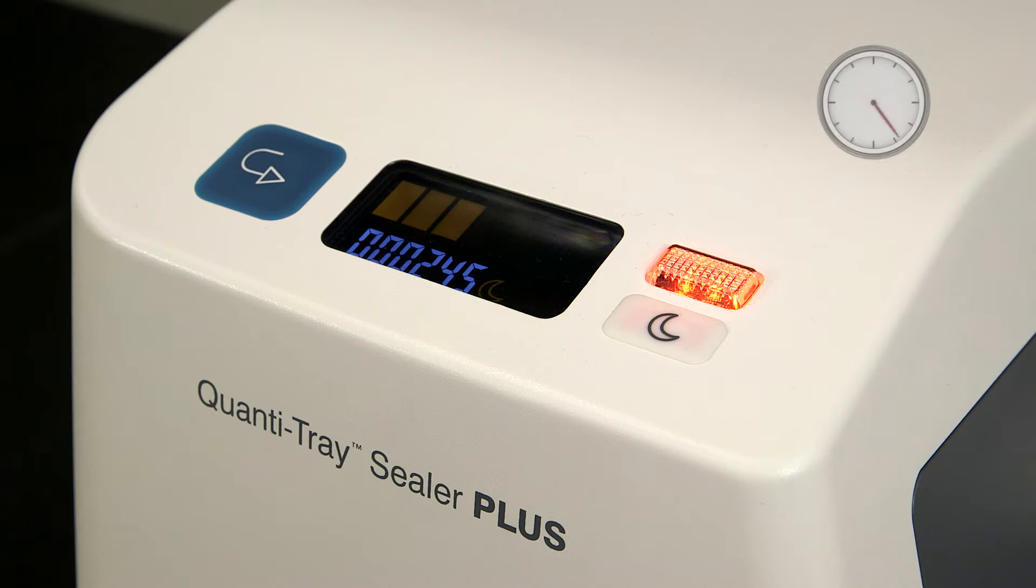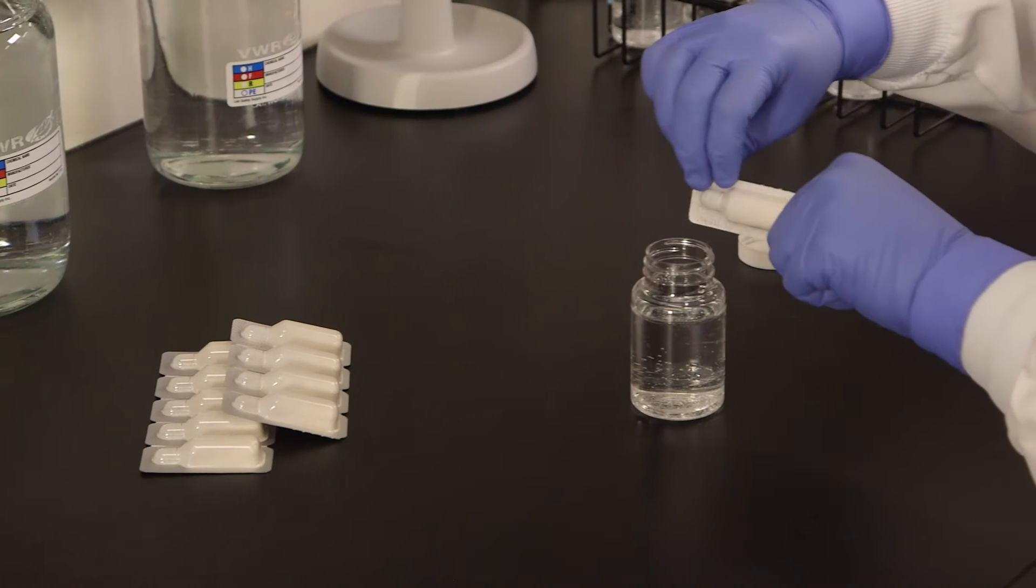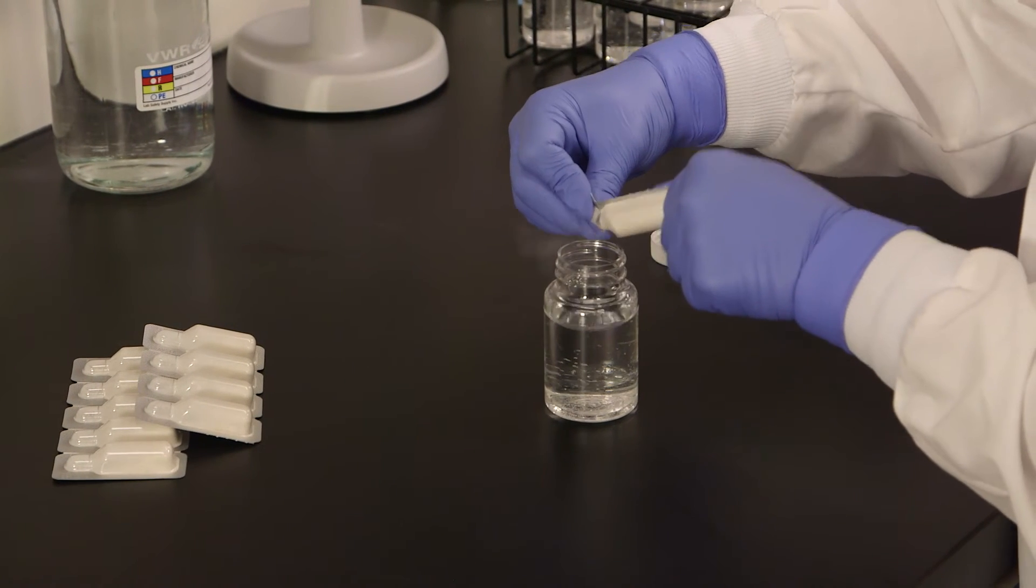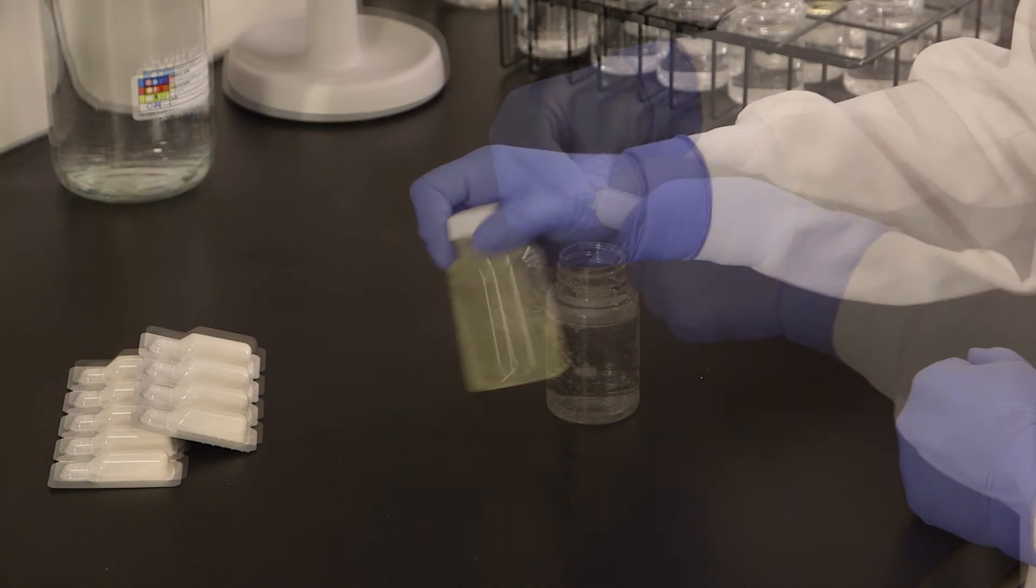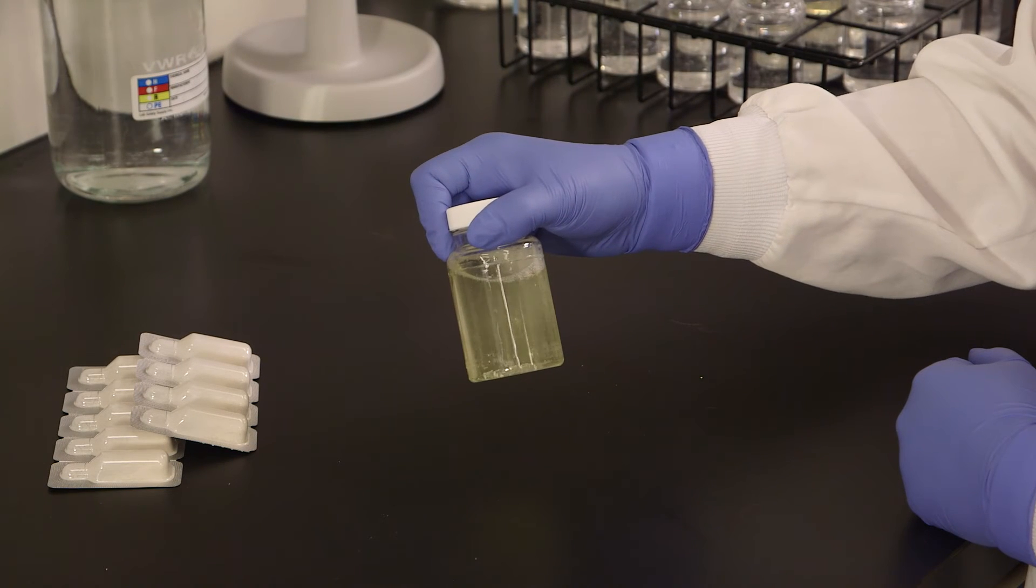Turn on the sealer and then wait until a green bar appears on the display. The sealer has now reached the appropriate sealing temperature. Add the Enteralert powder to a 100 ml sample and cap the vessel. This time, shake until the reagent dissolves completely.